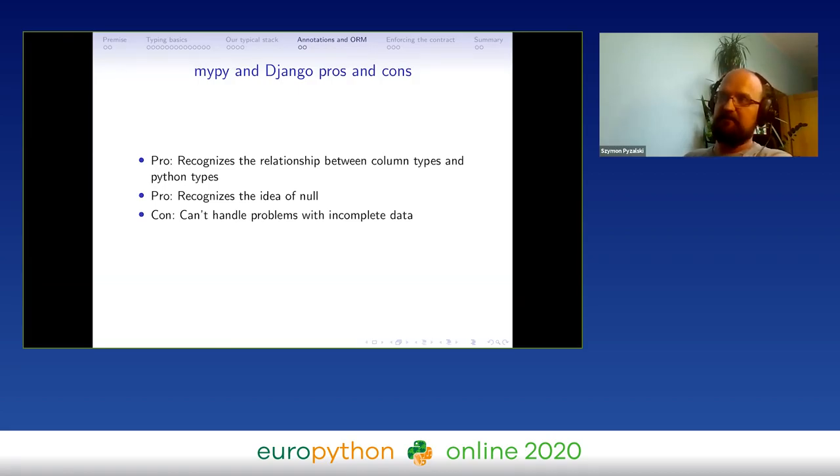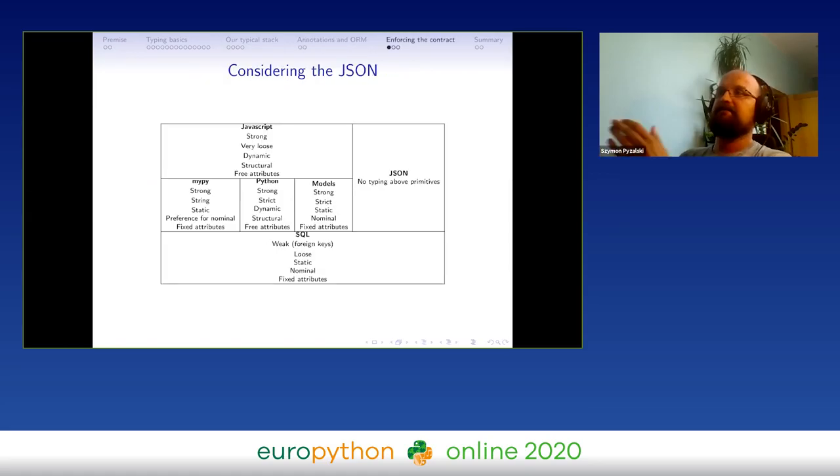So what about mypy? It already recognizes the relationship between column types and Python types. It recognizes the nullability of fields. However, it can't handle some problems when we make incomplete objects, and it also requires a mypy plugin. That's why it's not universal. This would only work with mypy, not with any tool that uses type annotation.